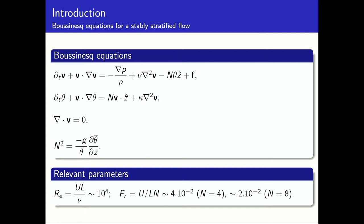From these equations we have two relevant dimensionless parameters: the familiar Reynolds number, which in our simulations was around 10,000, and the Froude number, which is another measure of the stratification. Typical values from our simulations are 4×10⁻² for N equals 4 and 2×10⁻² for N equals 8, where N is the Brunt-Väisälä frequency. A lower Froude number means more stratification.